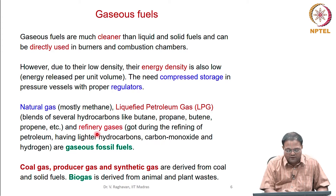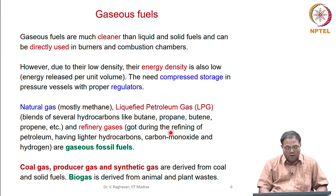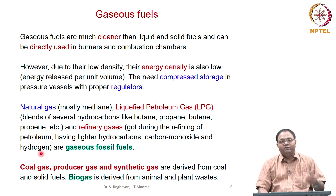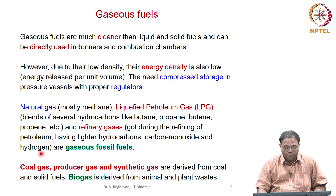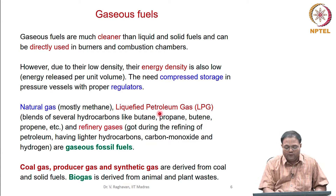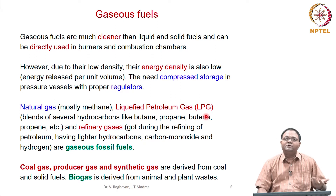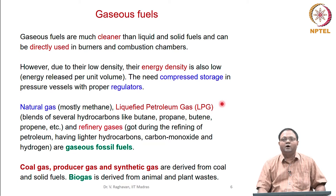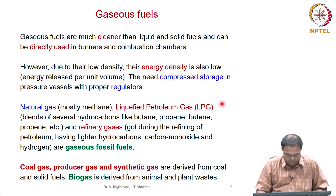LPG hydrocarbons are heavier than air, whereas natural gas, which is primarily methane, is lighter than air. We also get refinery gases when refining crude oil; these mainly contain carbon monoxide and hydrogen and are used within the refinery itself for heating purposes. Natural gas and LPG are commercially supplied to vendors, and LPG is used for domestic cooking purposes in India.